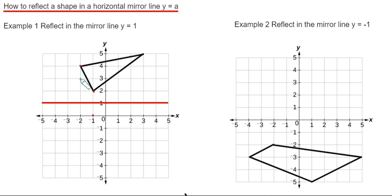So the next corner is 1, 2, 3 to the mirror line, so it's 1, 2, 3 on the other side. And our final corner at the top is 1, 2, 3, 4 squares to the mirror line. So it will be 1, 2, 3, 4 squares on the other side.